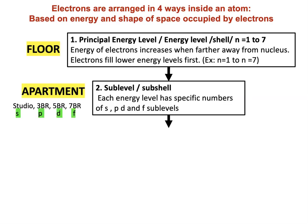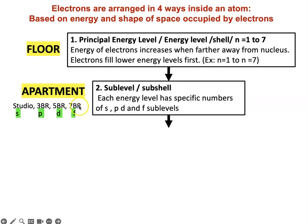In the floor you have various apartments. The analog to apartments inside an atom are called sub-levels, also called sub-shells. Each energy level has specific numbers of S, P, D, and F sub-levels. So if you have a studio apartment, it's an S sub-level — meaning it has only one room. A three-bedroom apartment is a P sub-level, because all P sub-levels have three orbitals. D sub-level has five orbitals — like a five-bedroom apartment. And F sub-levels have seven orbitals — like a seven-bedroom apartment.